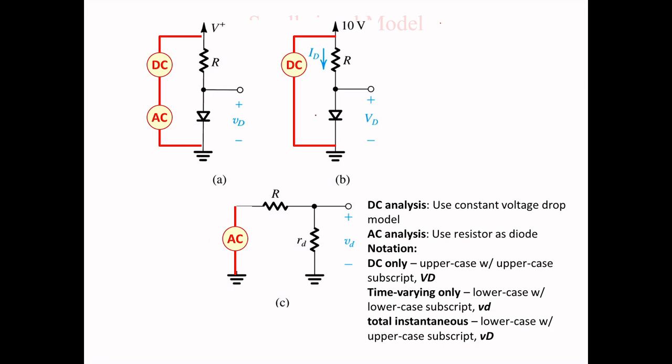First, see this circuit. This is a combination of DC and AC, which we call the total instantaneous. How it will be represented is important. It should be like capital V small d, or small v capital D - any combination you can follow. When you go for DC analysis, it should be all uppercase: capital V with subscript capital D. When you go for AC analysis, it should be all lowercase: small v, small d.